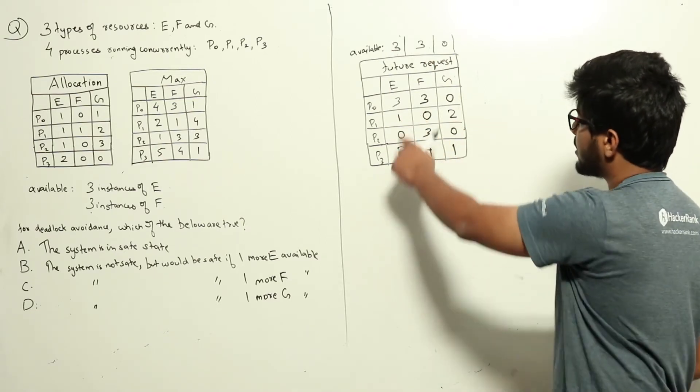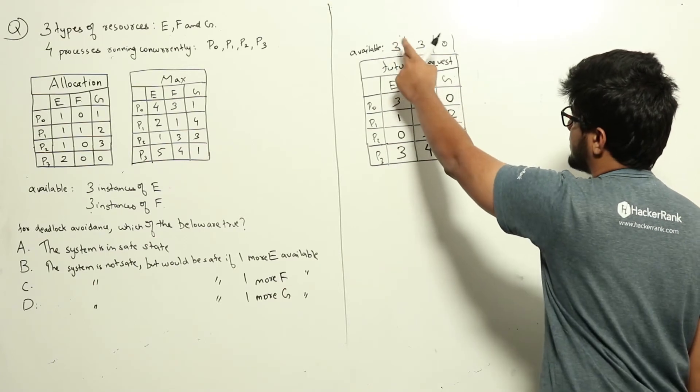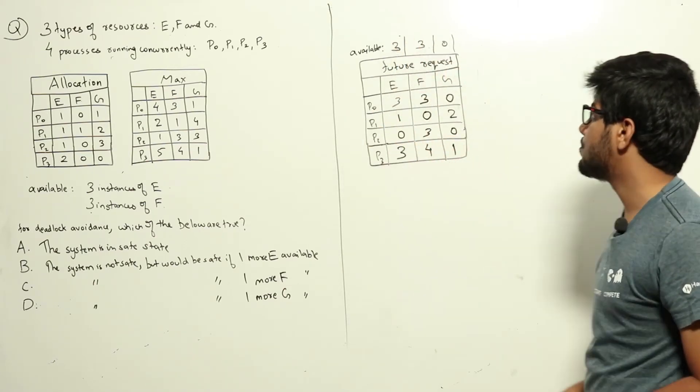We have three and three available. Let's look at P0. P0 can request up to three of E, up to three of F, and zero of G, which is less than what we currently have. So we can satisfy P0.